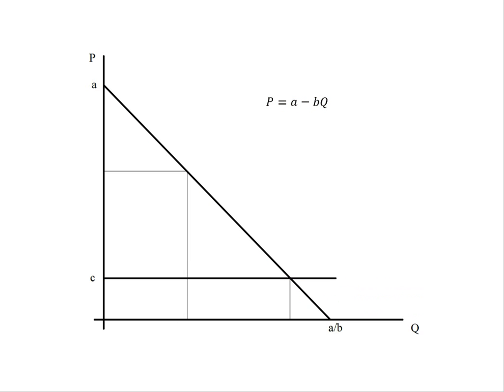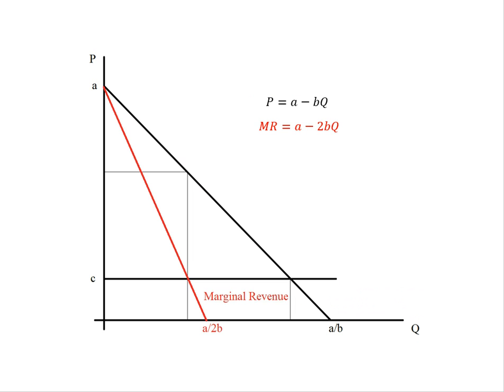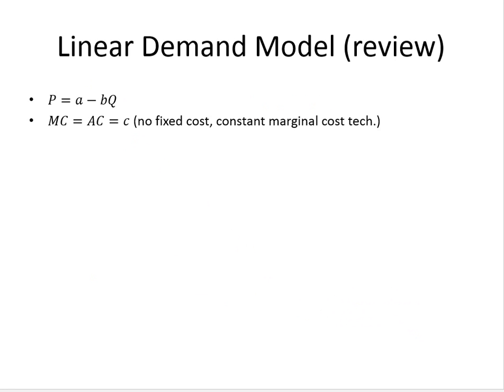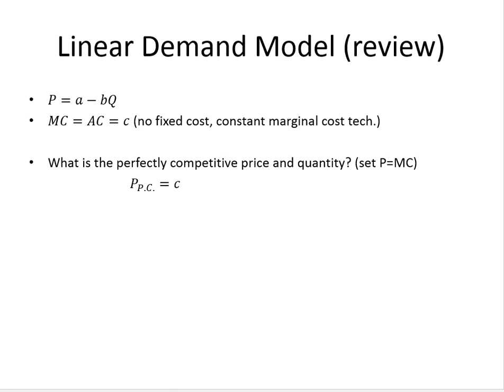We can also plot the marginal revenue curve, which has twice the slope of the original demand curve. We can then solve for both the perfectly competitive and monopoly allocation. Under perfect competition, the price is driven to marginal cost — we plug that into the inverse demand curve and solve for Q to find the volume of trade.